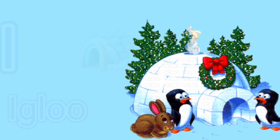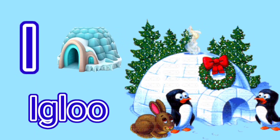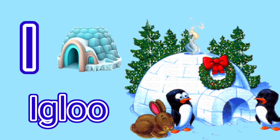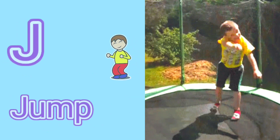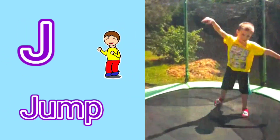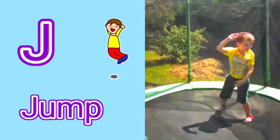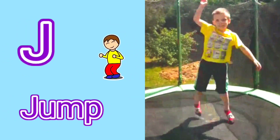I is for igloo, i-i-igloo. J is for jump, j-j-jump.